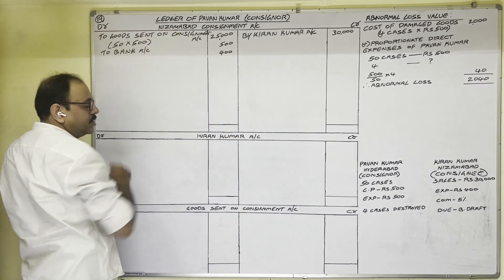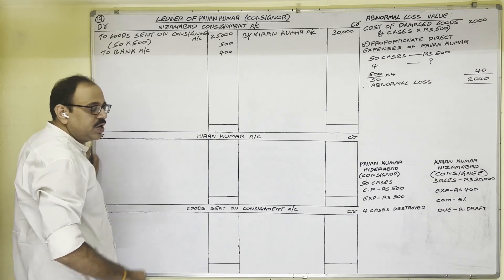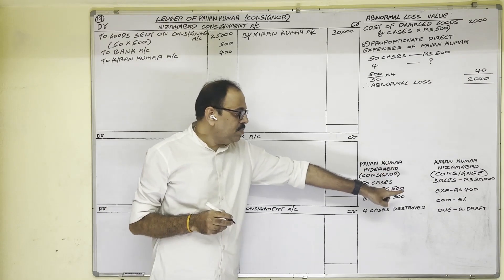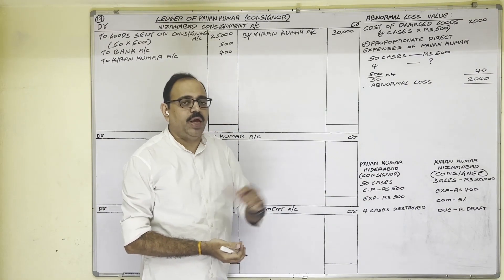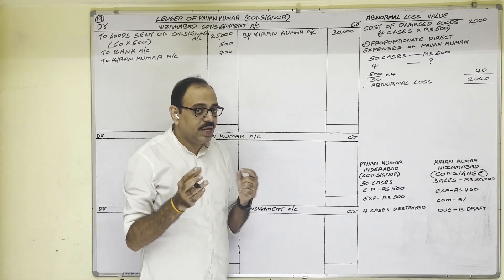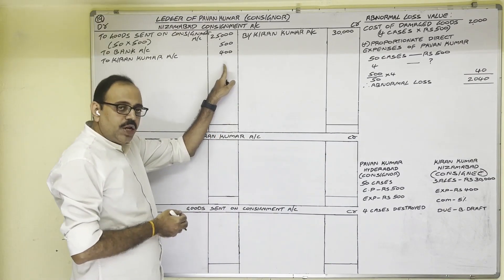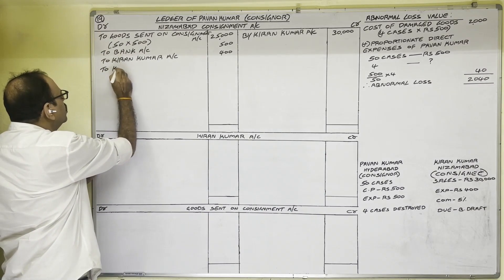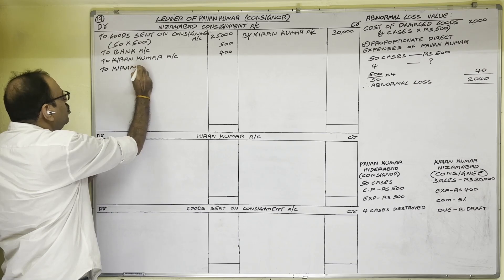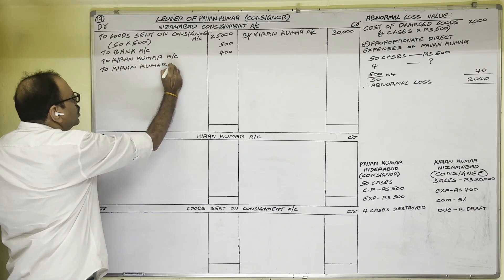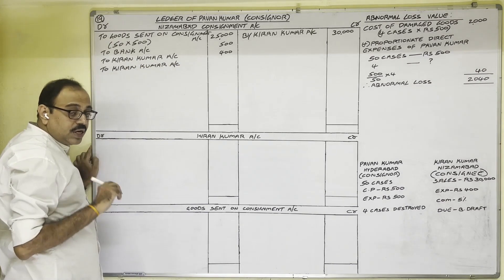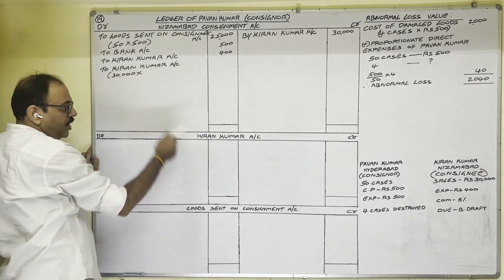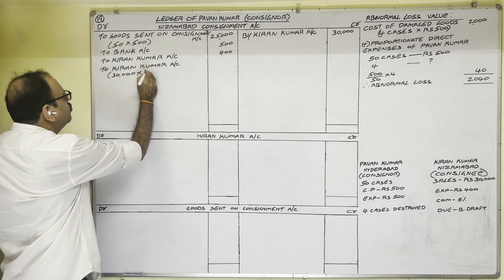For the consignee's expenses of 400 rupees, we write: To Kiran Kumar Account on the debit side. Next, the consignee's commission is 5% which the consignor has to pay, so it is an expenditure and goes on the debit side. We write: To Kiran Kumar Account. Commission is calculated on sales: 30,000 into 5% equals 1,500 rupees.